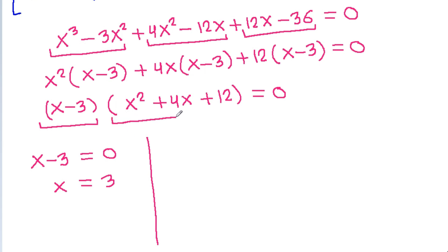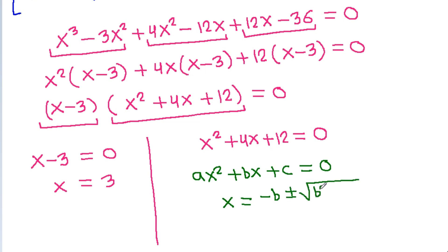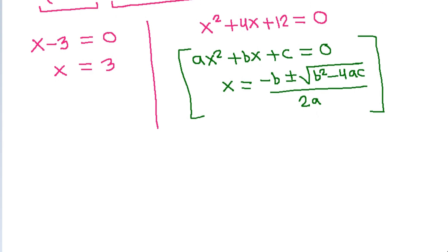So, x squared plus 4x plus 12 is equal to 0. Using the quadratic formula x equals minus b plus or minus square root of b squared minus 4ac, all over 2a, where a is 1, b is 4, and c is 12.